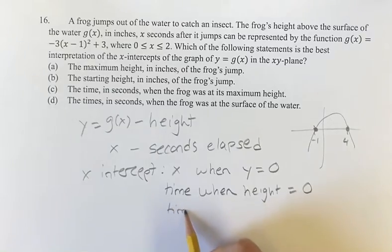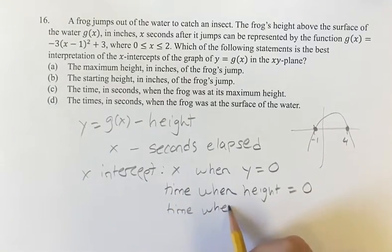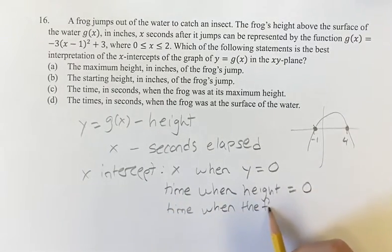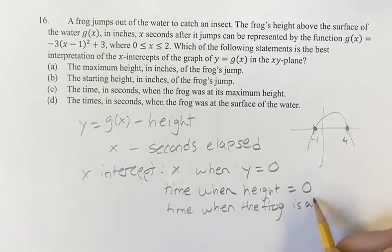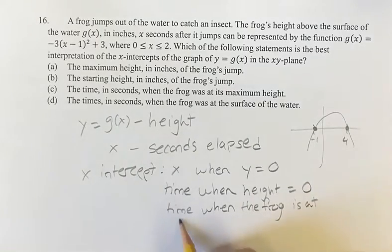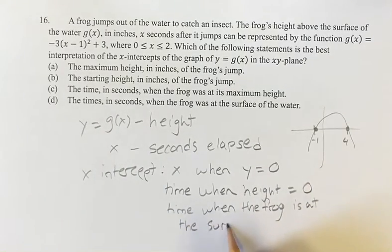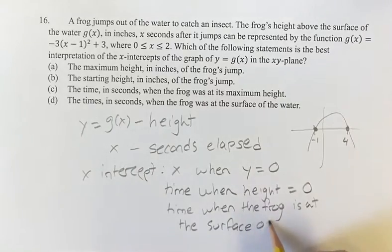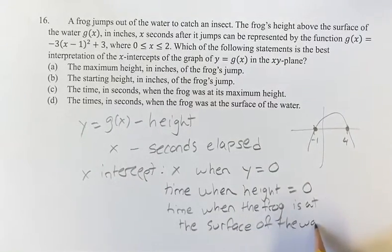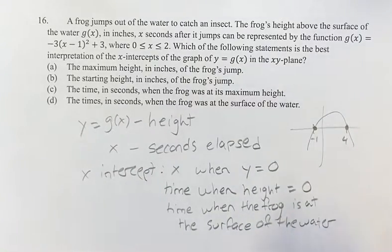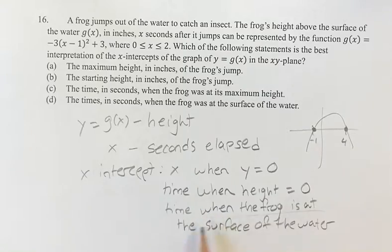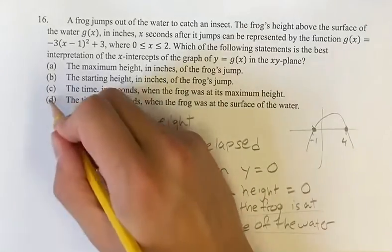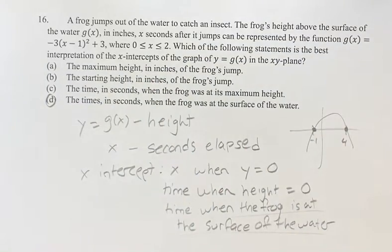So the x-intercept represents the time when the frog is at the surface of the water. This is our interpretation of the x-intercept of y equals g of x. This lines up with answer D. As always, thank you for liking and subscribing, and I'll see you in the next video.